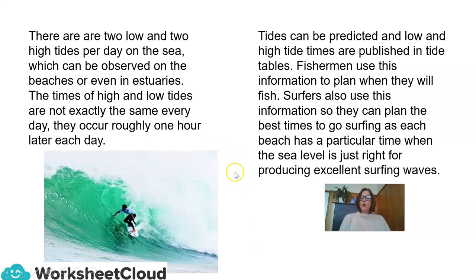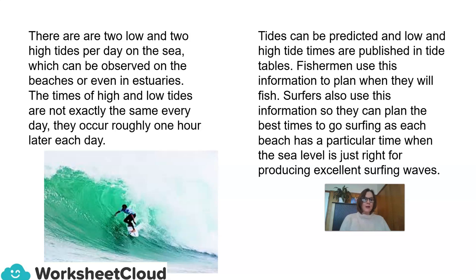There are two low and two high tides per day on the sea, which can be observed on beaches or even in estuaries. The times of high and low tides are not exactly the same every day — they occur roughly one hour later each day. Tides can be predicted, and low and high tide times are published in tide tables. Fishermen use this information to plan when they will fish, and surfers use it to plan the best time to surf, as each beach has a particular time when the sea level produces excellent surfing waves.